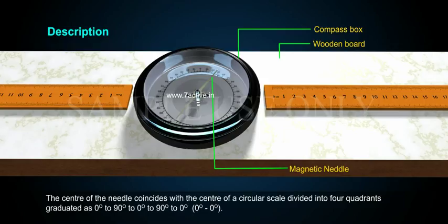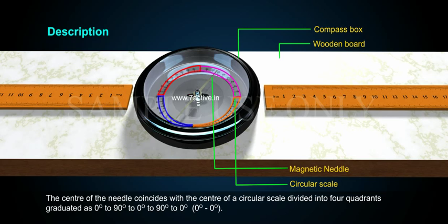The center of the needle coincides with the center of a circular scale divided into four quadrants graduated as 0 degree to 90 degree, 90 degree to 0 degree, 0 degree to 90 degree, 90 degree to 0 degree.